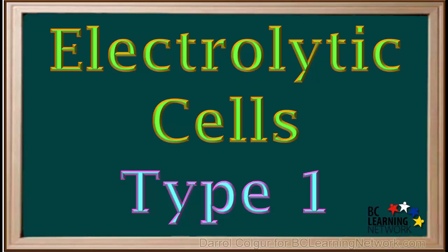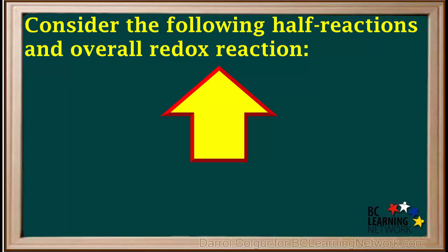Electrolytic cells use an external power supply to force a non-spontaneous redox reaction to occur. To get an idea of what an electrolytic cell, in general, is, we start by looking at two half-reactions and the overall redox reaction we get by adding them.